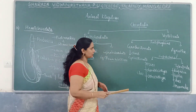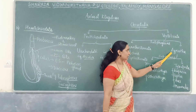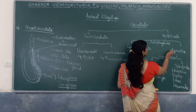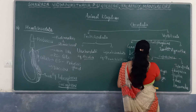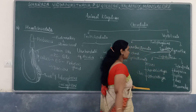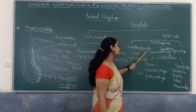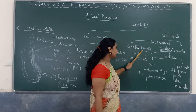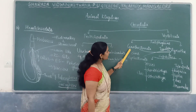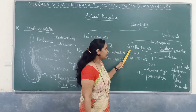Vertebrata consists of two sub-phyla: Gnathostomata and Agnatha. Agnatha means jawless organisms — there is a single class under Agnatha called Cyclostomata, which have a circular mouth with no jaw. Gnathostomata means jaw-bearing organisms. Gnathostomata is further classified into two superclasses: Pisces (bearing fins) and Tetrapoda (bearing limbs).